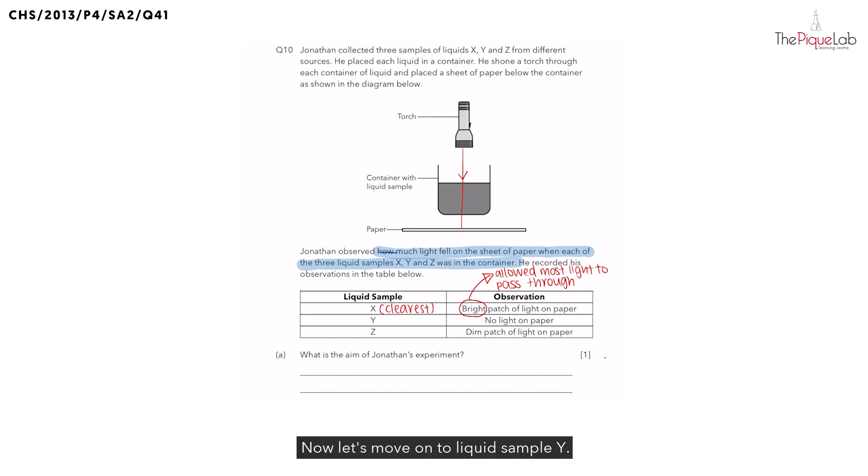Now let's move on to liquid sample Y. Now we notice liquid sample Y is the opposite of X. Instead of a bright patch of light, we see that there was no light on the paper at all. So if there was no light observed, what does it tell you? Did any light manage to pass through liquid sample Y? No.